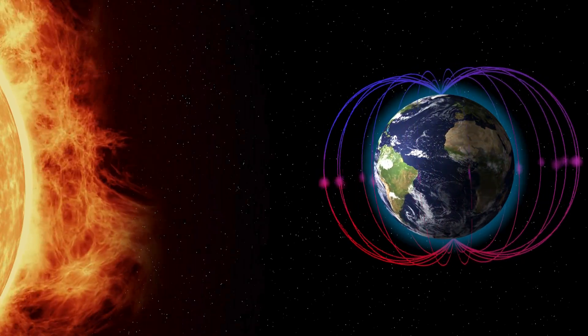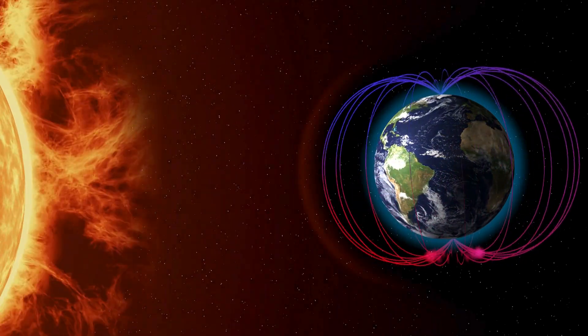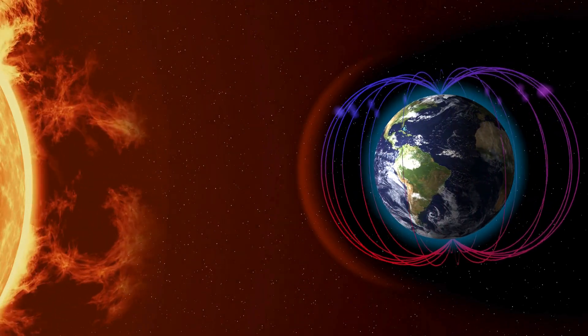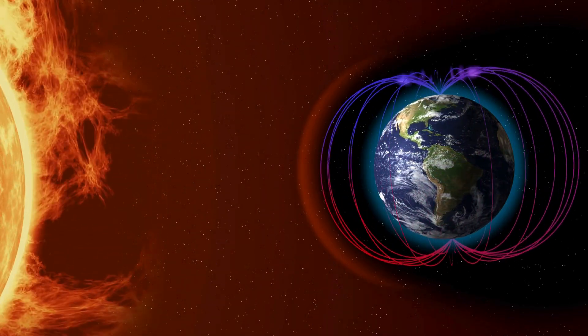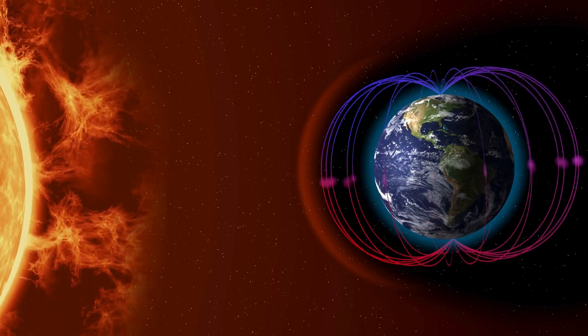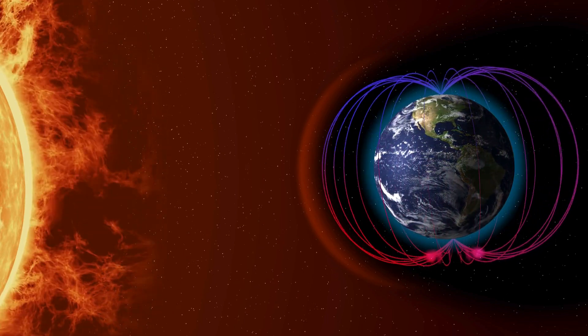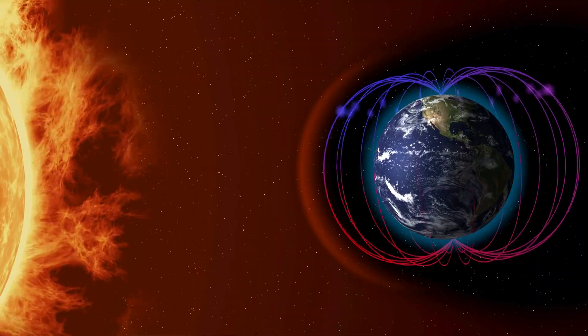You are not going to believe this news from NASA. They're tracking what they actually call a massive anomaly spreading across the planet. Yeah, it sounds dramatic, doesn't it? Totally. But it's not aliens, folks. It's about Earth itself. We're talking about the South Atlantic anomaly, the SAA.